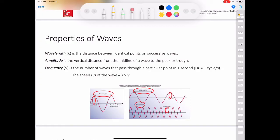Wavelength, which we use the symbol lambda for, is the distance between identical points on successive waves. The frequency, for which we use the variable nu, is the number of waves that pass through a particular point in one second. And amplitude is the vertical distance from the midline of a wave to a peak or a trough.